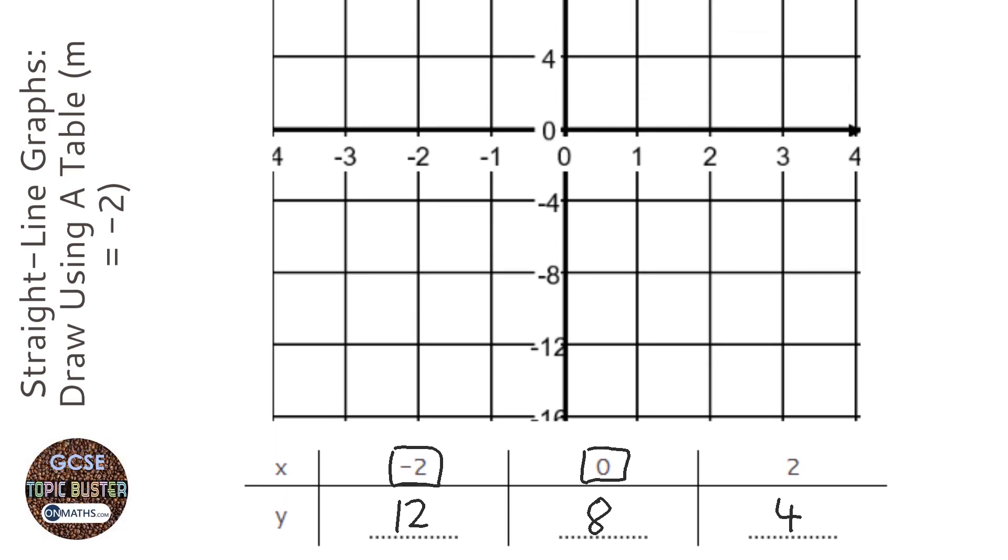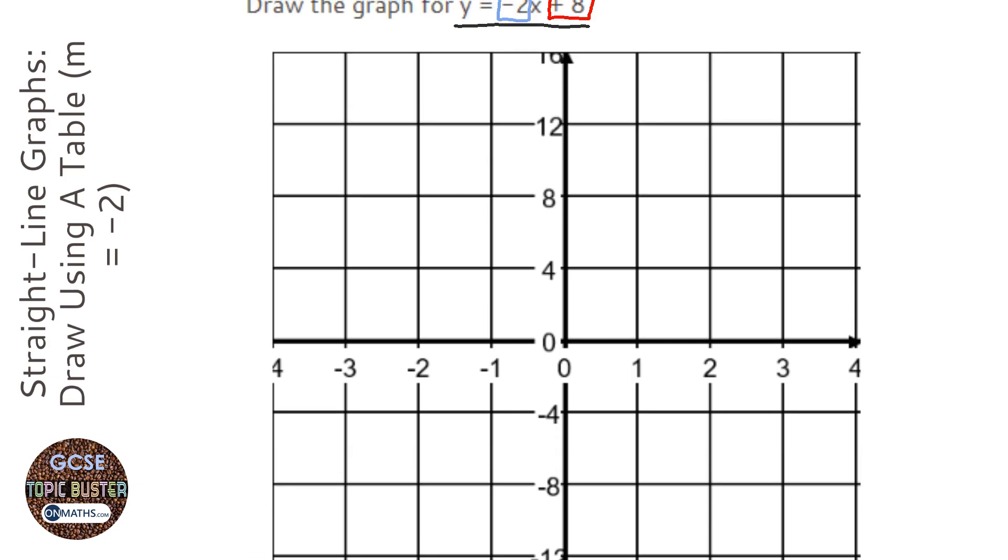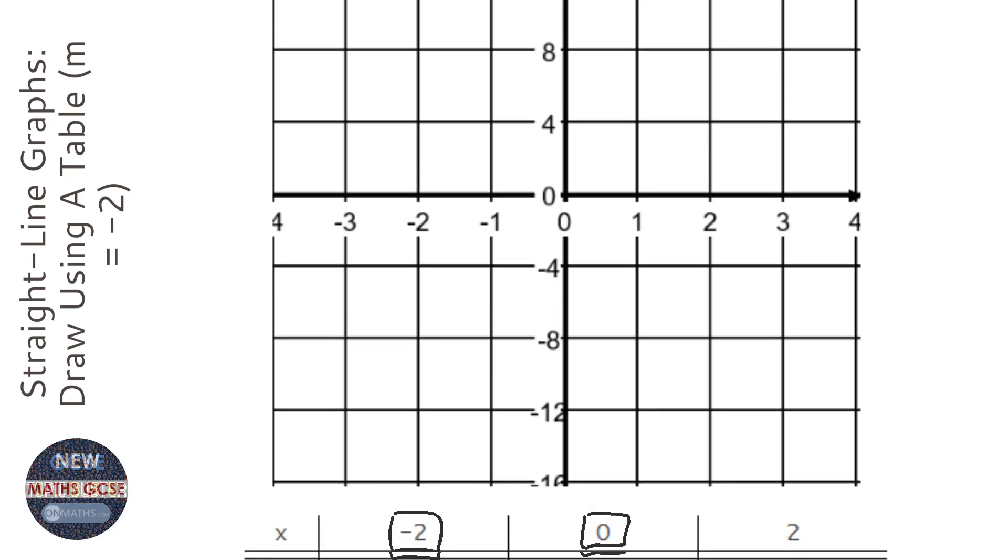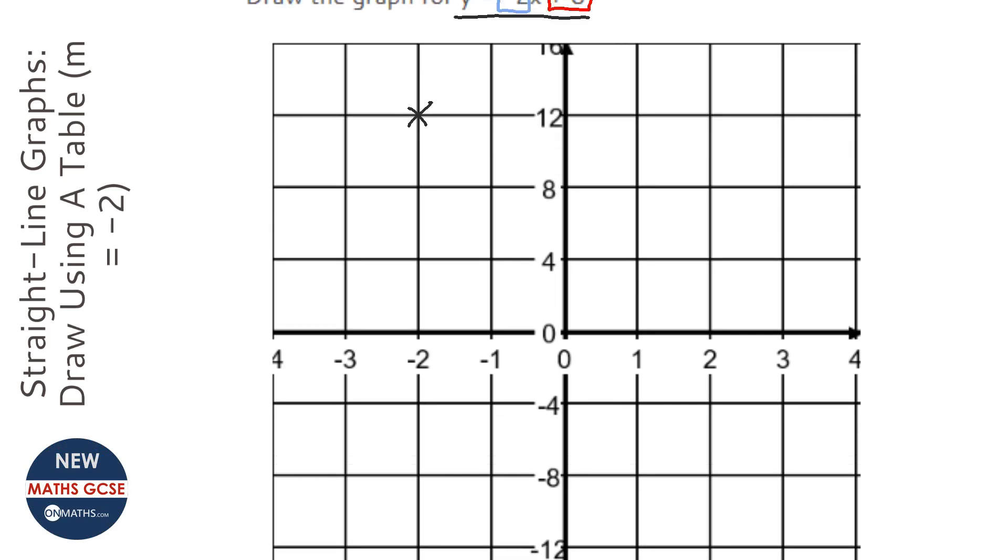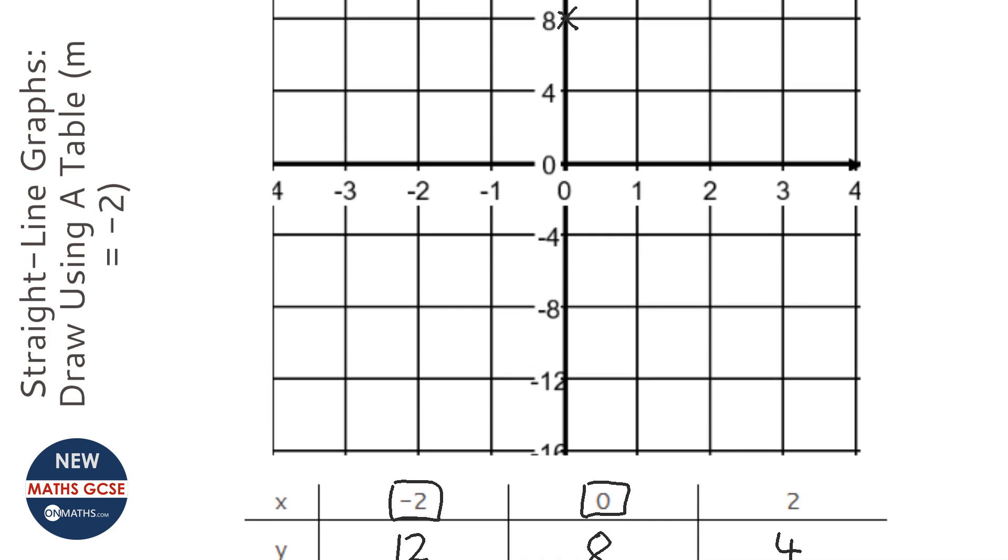Whenever we have three points, we can just plot them. So minus 2 is at 12, so we can plot that. 0 at 8, so we plot it. And 2 and 4.